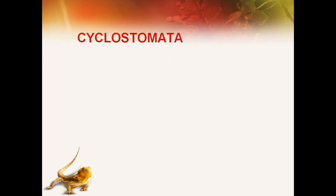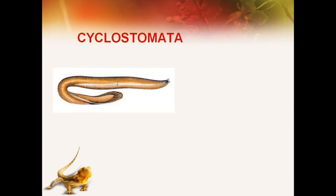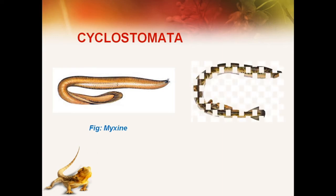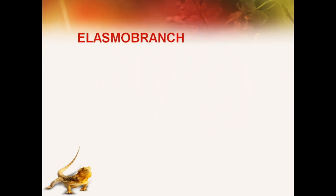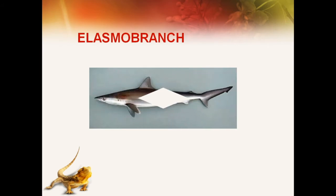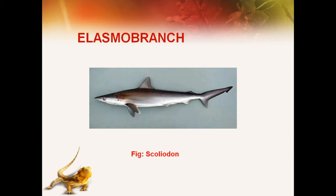In case of Cyclostomata, for example Myxene and Petromyxone, the exchange of gases takes place through their vascular skin confined only in the larval stages. In Elasmo branch, for example Scoliodon, the skin is rough and thick and does not help in skin respiration, but the mucous membrane of gills is well developed and helps in respiration.